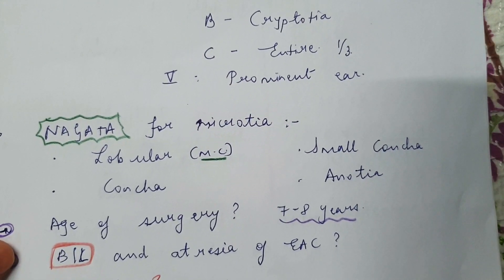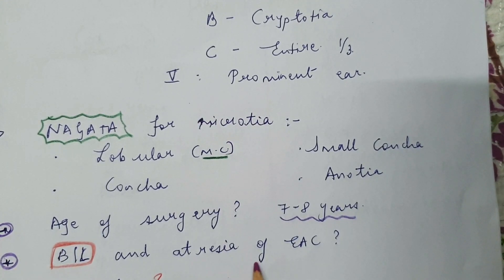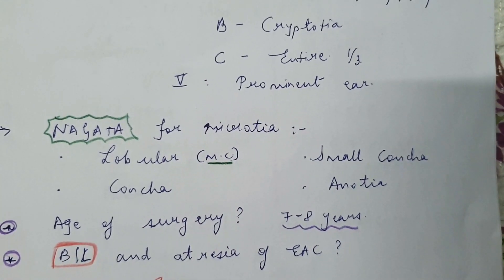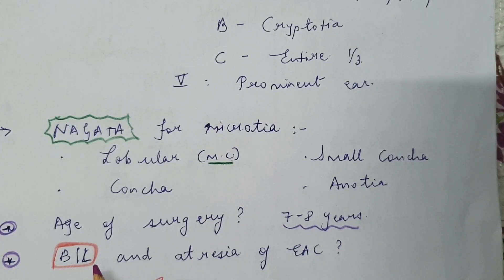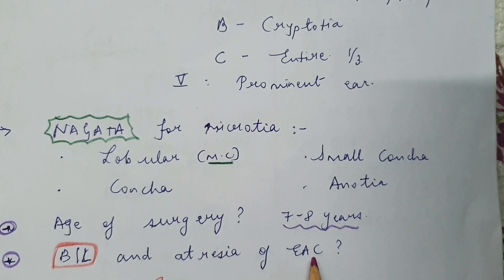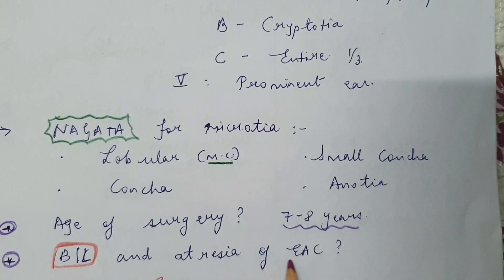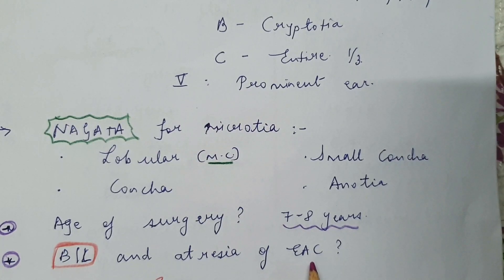In cases of bilateral microtia, if both ears are missing, the template is taken from another child of the same age, gender, and height. If there is atresia of the external auditory canal, in unilateral cases reconstruction of the canal is not attempted because the child's hearing is still present. However, in bilateral cases, along with ENT surgeons, the external auditory canal can be reconstructed — but microtia reconstruction should come first to have a virgin, unscarred area. Bone-anchored hearing aids (BAHA) are easier, less complicated, and help with the child's hearing.